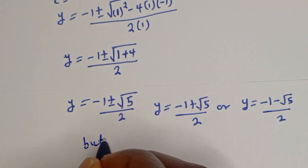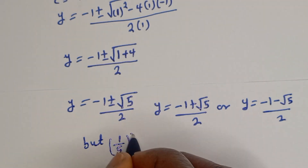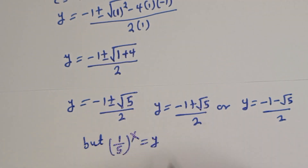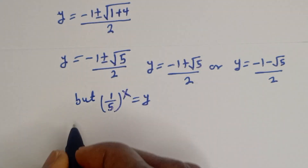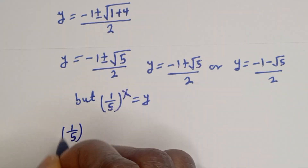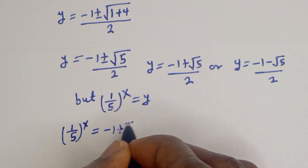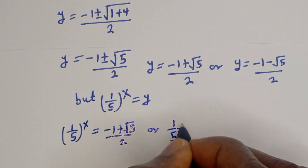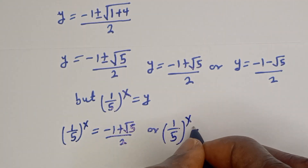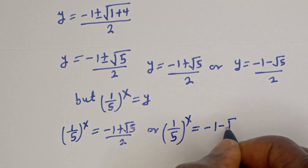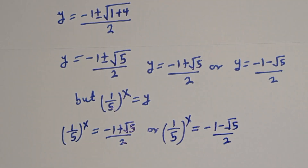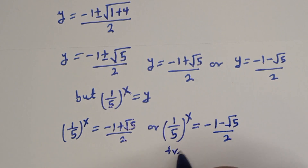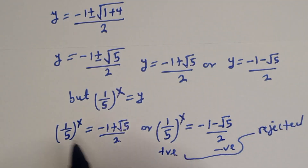Since 1 over 5 to the power of x equals y, we have two candidates: (1/5)^x equals (negative 1 plus root 5) over 2, or (1/5)^x equals (negative 1 minus root 5) over 2. The second solution is negative, so it is rejected. The only valid solution is the first one.